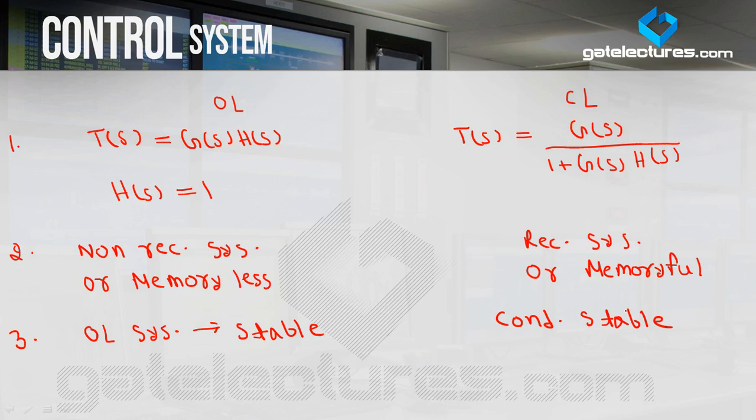In an open loop system, generally it is stable. But if the open loop system is unstable, there is no way to control it — it will remain unstable. However, generally open loop systems are stable.